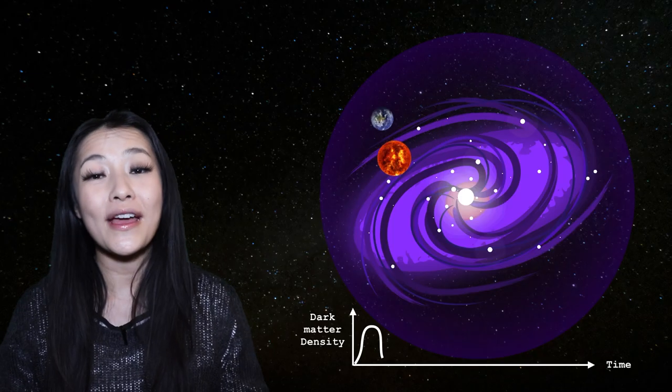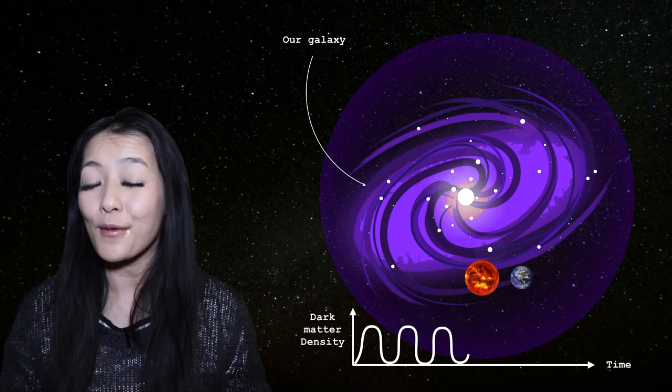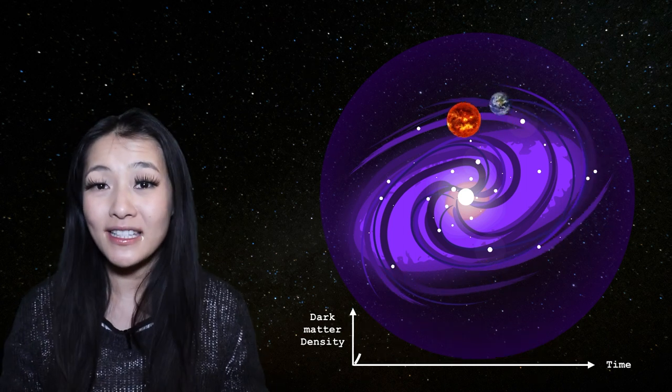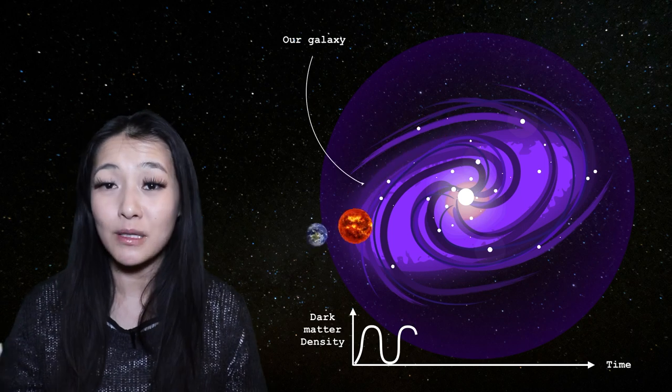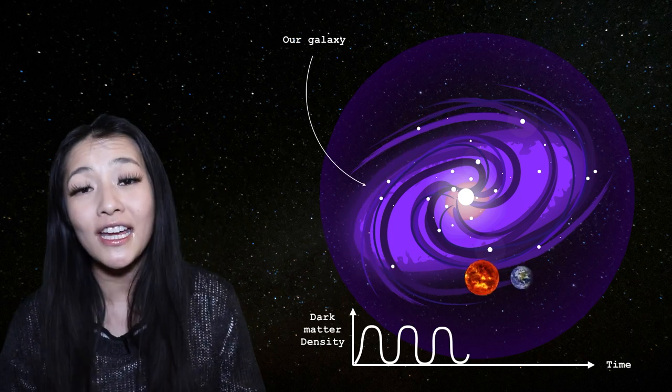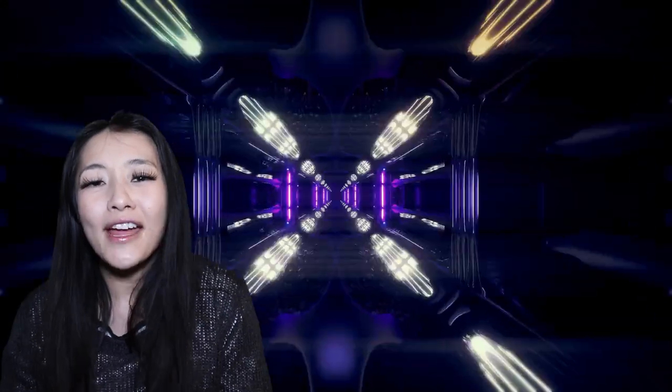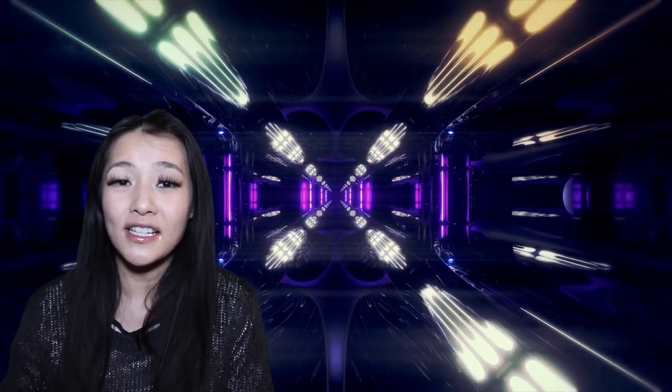Their results show a dark matter signal that changes with the time of the year. And this is something that you maybe might expect since the density of dark matter the experiment passes through will change as the earth moves around the sun. The DAMA experiments have been running since 1995.